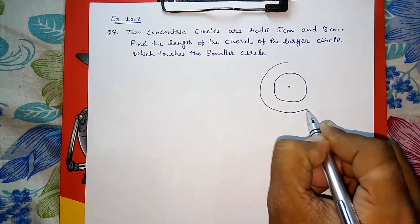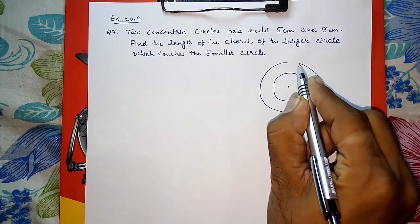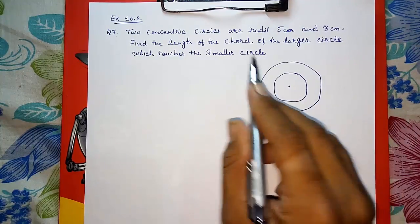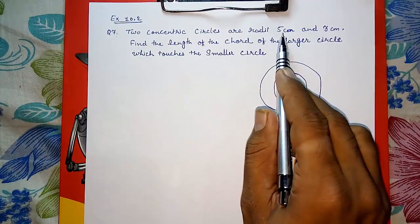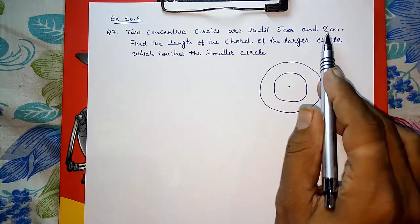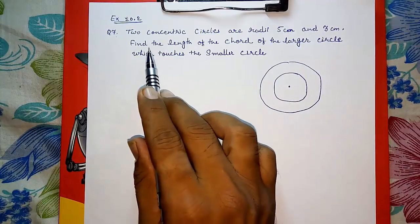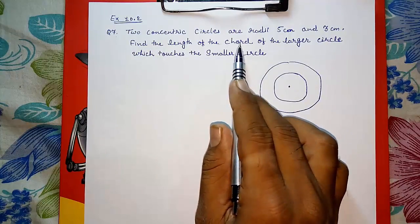These are the two circles having the same center point. These are called concentric circles. The radius of one is 5 centimeters, the bigger one, and the smaller one is 3 centimeters.